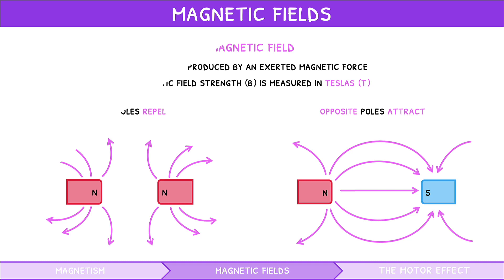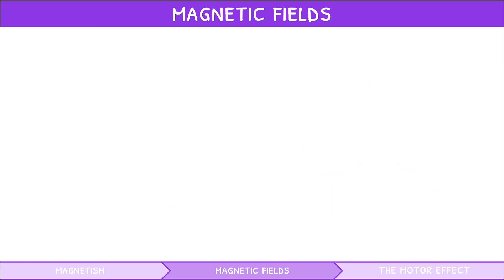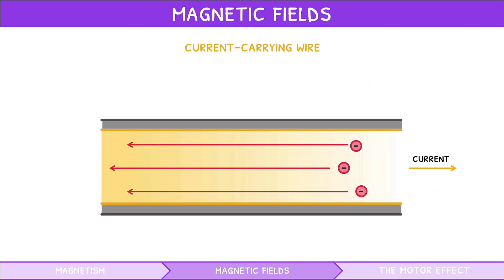However, not only permanent magnets produce magnetic fields. A current carrying wire contains moving charges and thus also generates a perpendicular magnetic field. However, a wire can also be fashioned into different shapes to produce different magnetic fields.